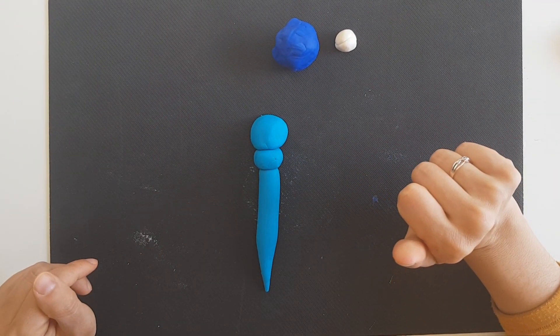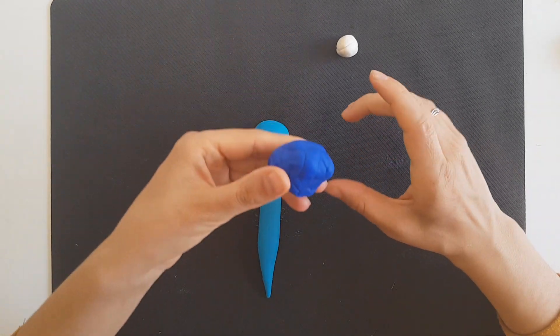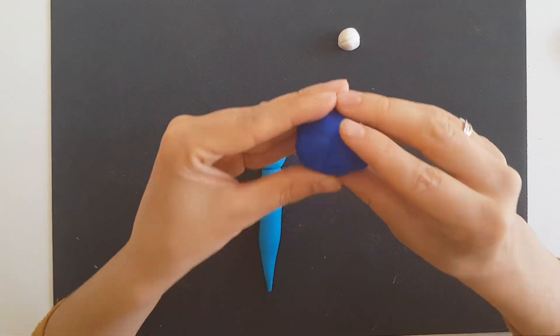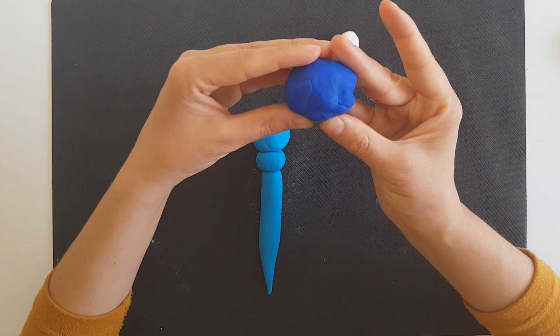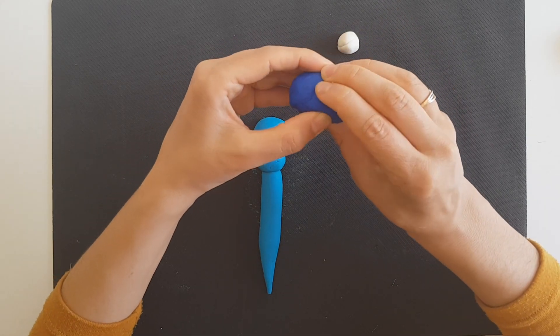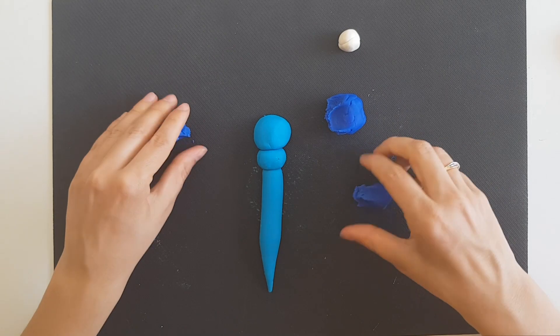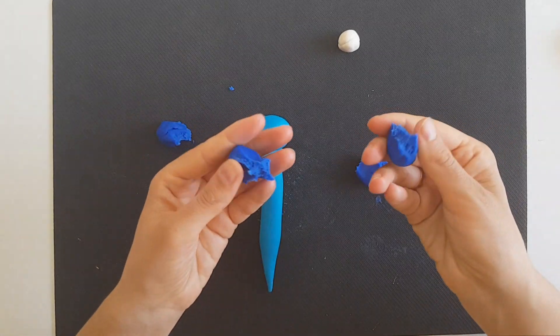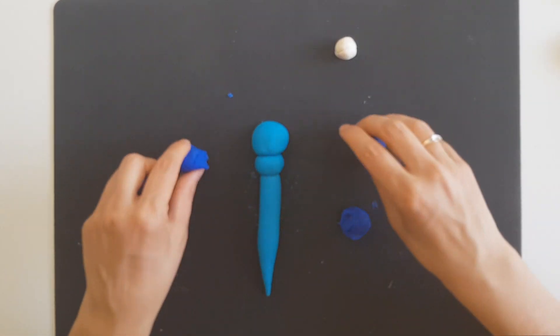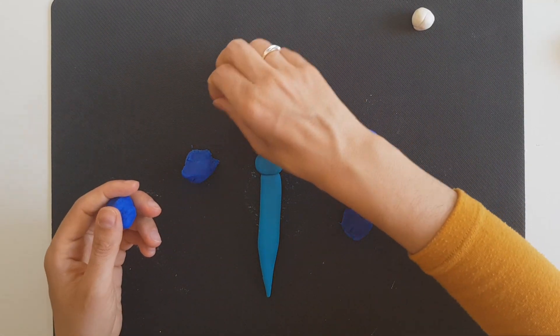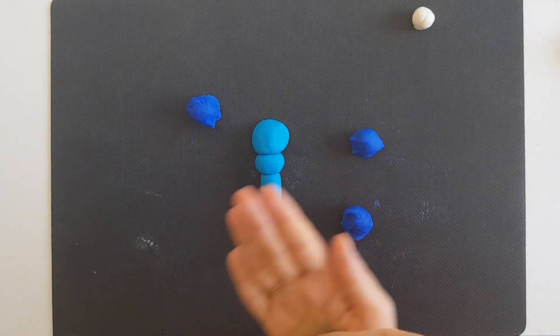Now let's continue with the wings. I will divide this play-doh that I have here in four pieces for the wings. And try to divide them the same, the same size. When you are ready, make those balls.